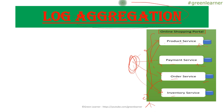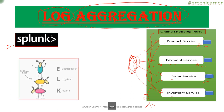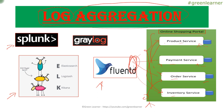This is what log aggregation means — aggregation means combining things, and logs are the log files we have for each service. Now, how do we do it? There are different third-party tools — open source and paid — that we just configure and they start working. Very popular options include Splunk, which I use in my company and is very efficient. Other options are ELK (Elasticsearch, Logstash, Kibana), Graylog, and Fluentd. You can Google 'log aggregation tools' to find many more. That's all about log aggregation.